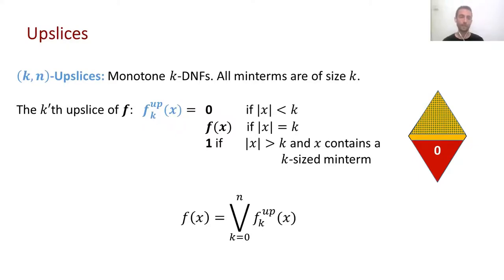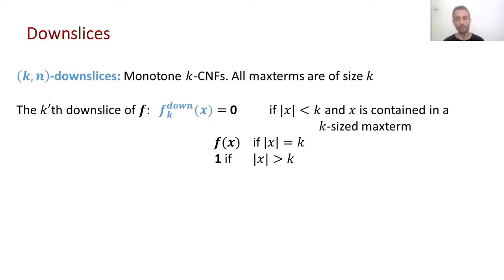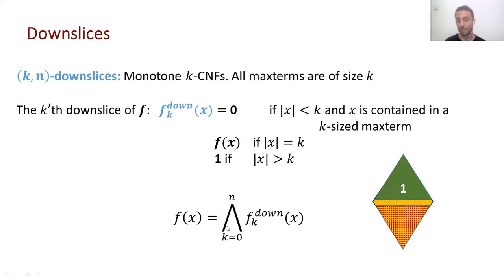Analogously, we can define down-slices, which are monotone K-CNFs, or functions where all of the max terms are of size exactly K. The K-th down-slice of a function F has the exact same max terms as F of size K. For small sets, the behavior of the function is defined by what happens on the K-th layer. F can be decomposed into its n down-slices with one AND gate with fan-in n.